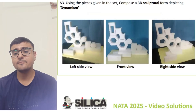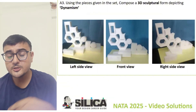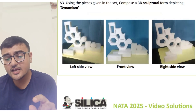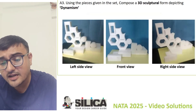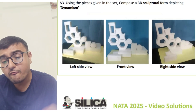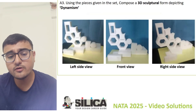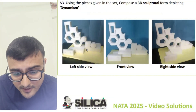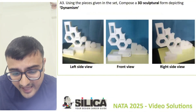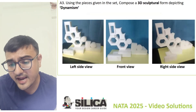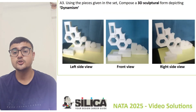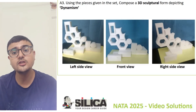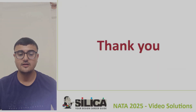In this composition you can see the dynamic flow from the front side, right side, and left side. Compose the 3D forms in an alternating and diagonal way in an increasing manner to achieve dynamism. Both horizontally and diagonally you can see the dynamism. Make two to three options and then finalize your composition.